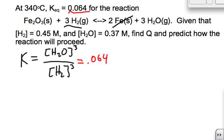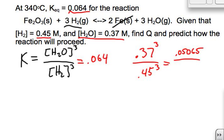So what I want to do is figure out what is the ratio at the moment. I know the water concentration is 0.37, so I can say 0.37 cubed divided by the concentration of hydrogen, 0.45 cubed, and I'm going to calculate this out. So 0.37 cubed is 0.05065, 0.45 cubed is 0.091125, so that comes out to be 0.556.